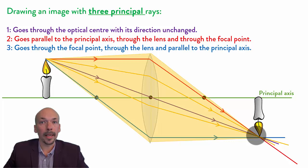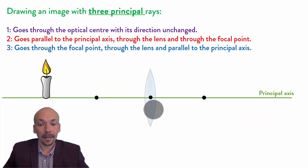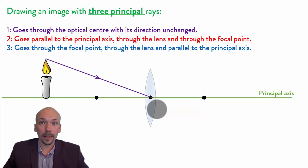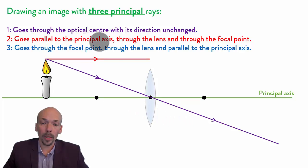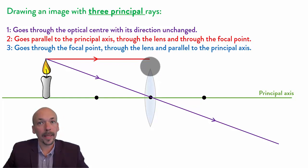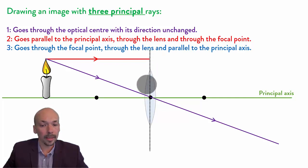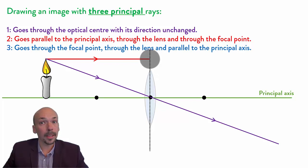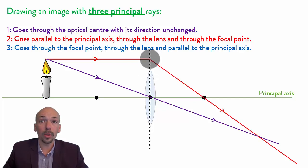Now see what happens when we make the lens a bit smaller. We can still draw the image using the three principal rays. The first ray goes through the optic center and its direction is unchanged. The second one goes parallel to the principal axis, but here it does not hit the lens — it looks like a problem but it isn't. Since this is a principal ray, we can just make the lens longer for drawing purposes. So the real lens is not this big, but for drawing we can extend it. Now it hits the lens, goes through, and goes through the focal point.